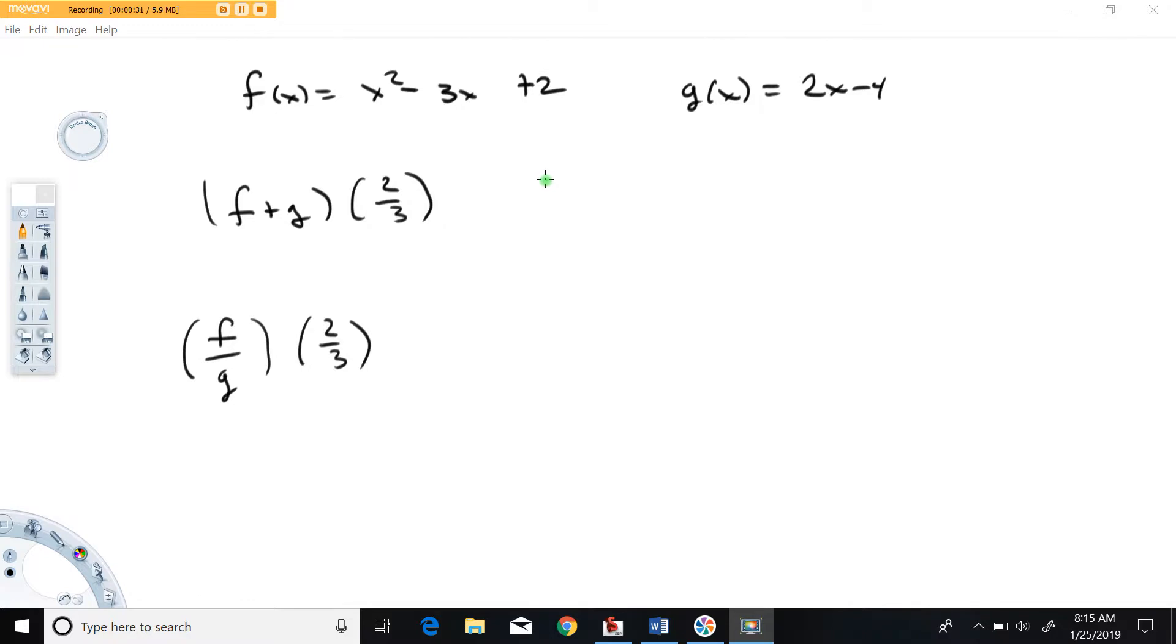Let me just give it a name. I'm going to call it h which is equal to f plus g, which is equal to this plus this: x squared minus 3x plus 2 plus 2x minus 4. And let's simplify that. Let's see, x squared and that's going to simplify to minus x minus 2.